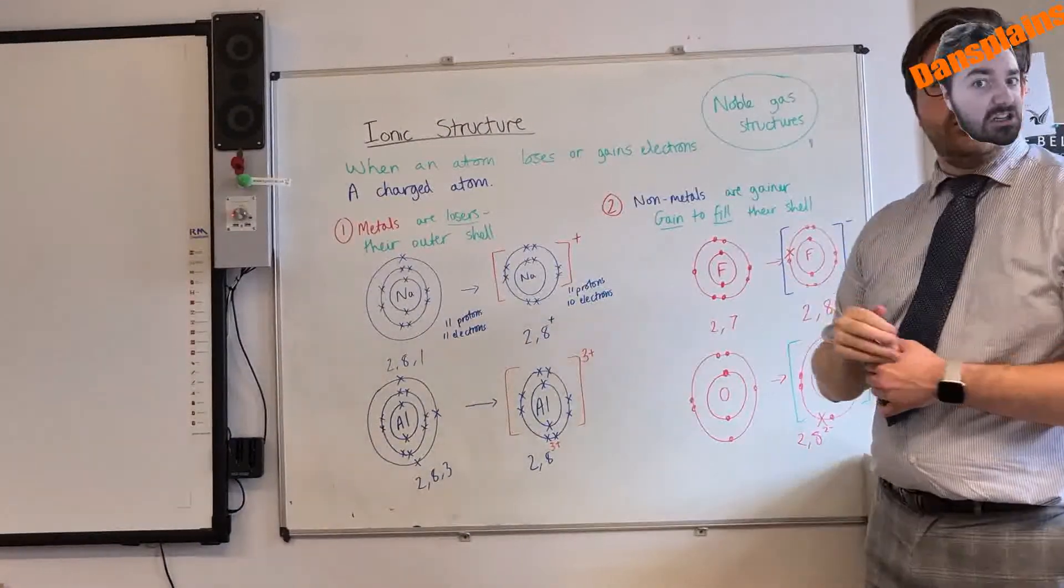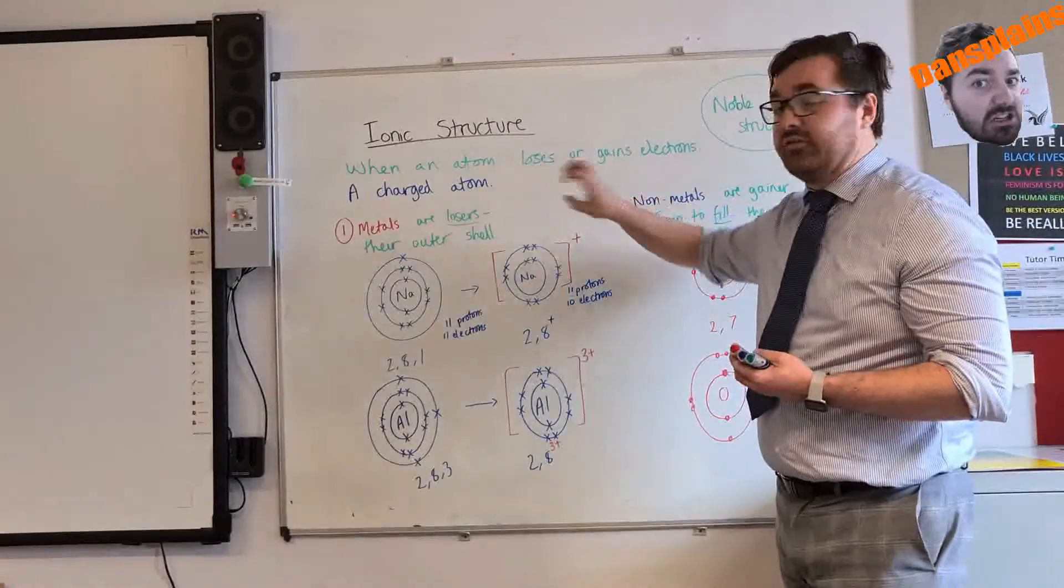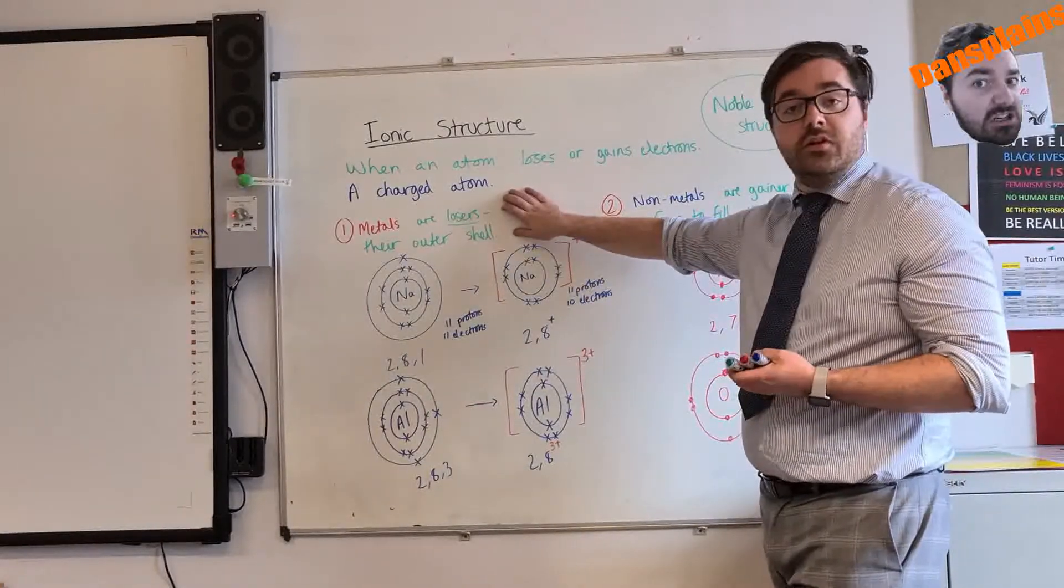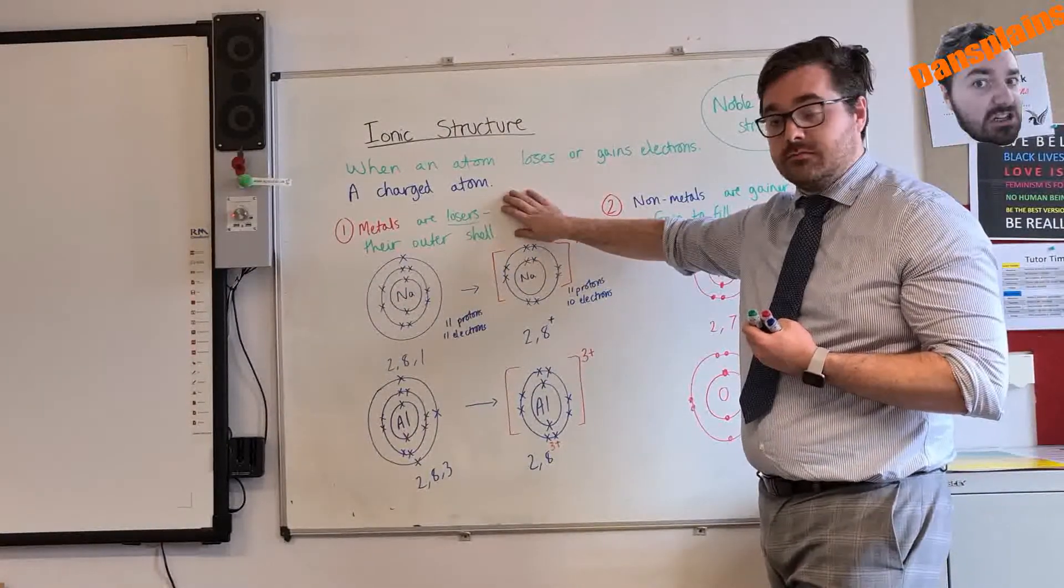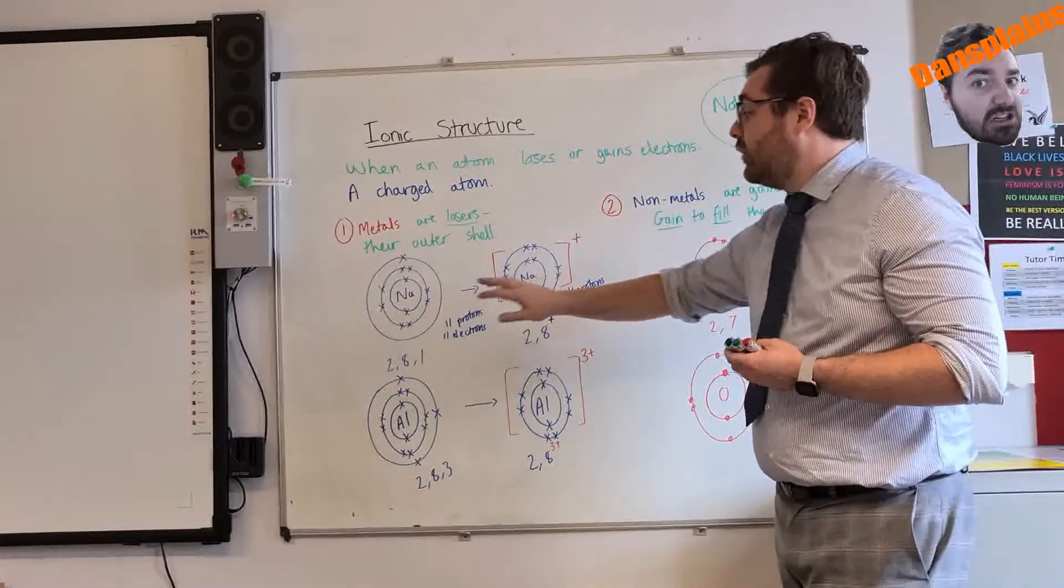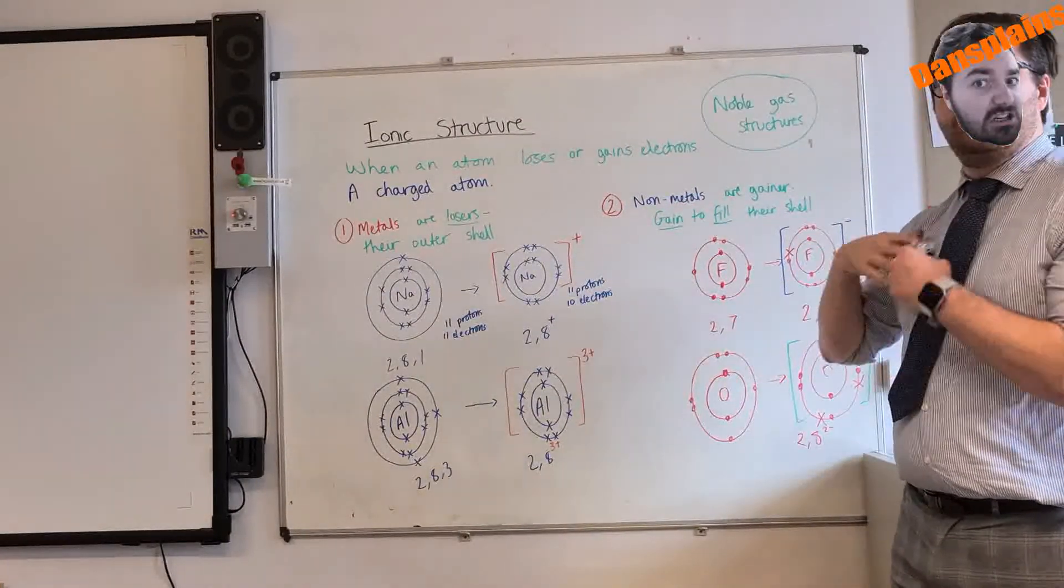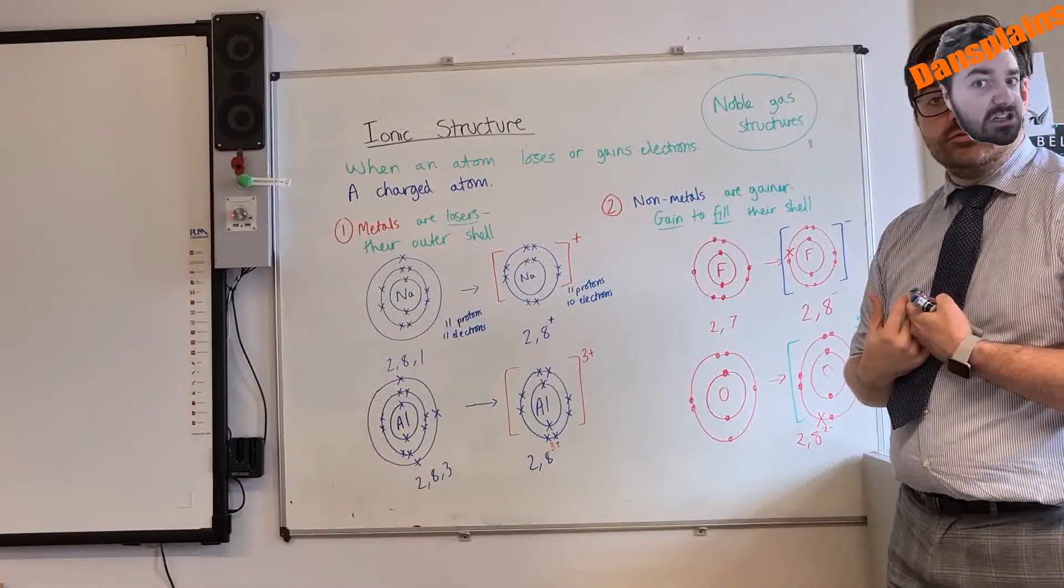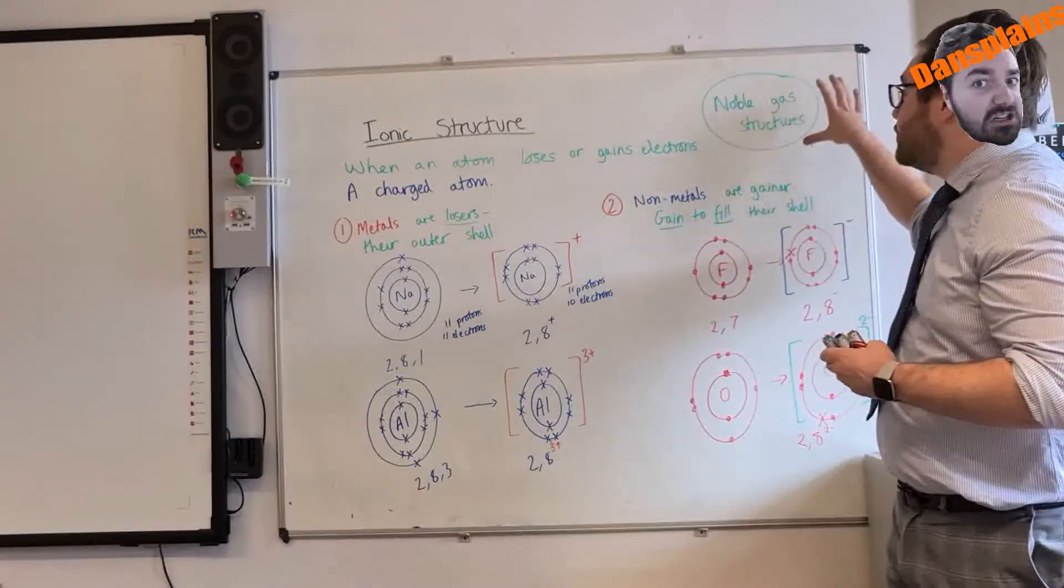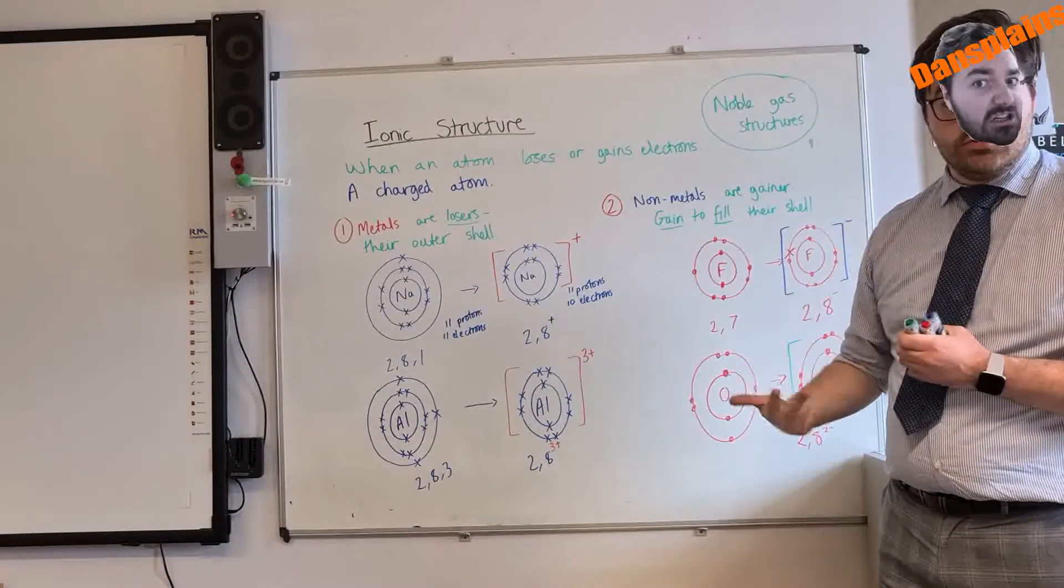And that is everything in ions. So I'll just recap it very quickly. Ions are charged particles when we lose or gain electrons. Metals lose electrons. Non-metals gain electrons. Metals lose their whole outer shell to make positive charges. Non-metals gain to fill their outer shell, so they gain negative charges. These are noble gas structures with 2, 8.